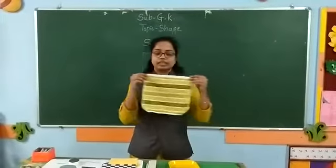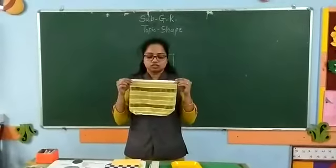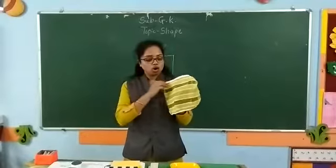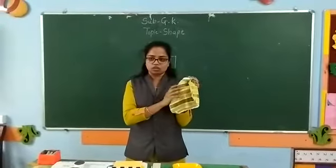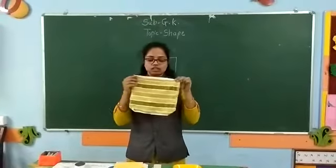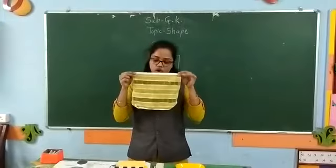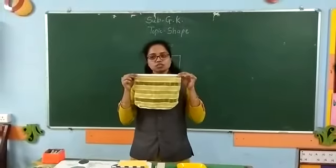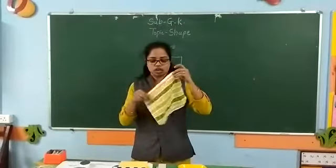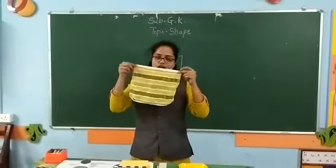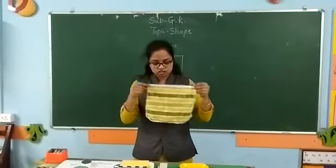Now, this is a napkin. You all wipe your hands with a napkin. This is a napkin. It also has a square shape. It also has four sides and four corners.